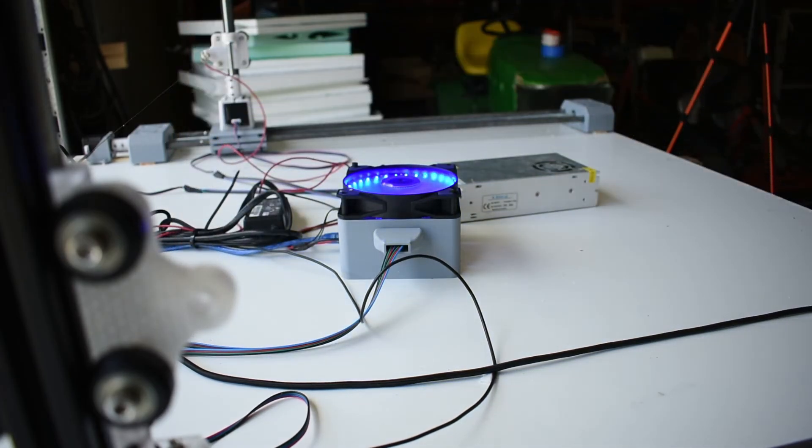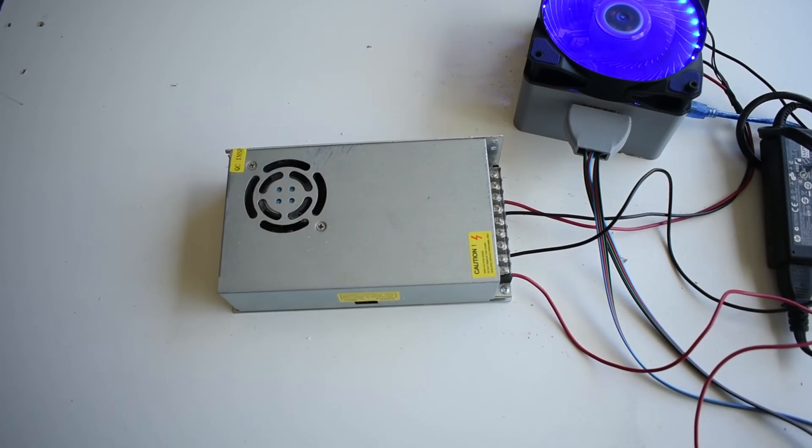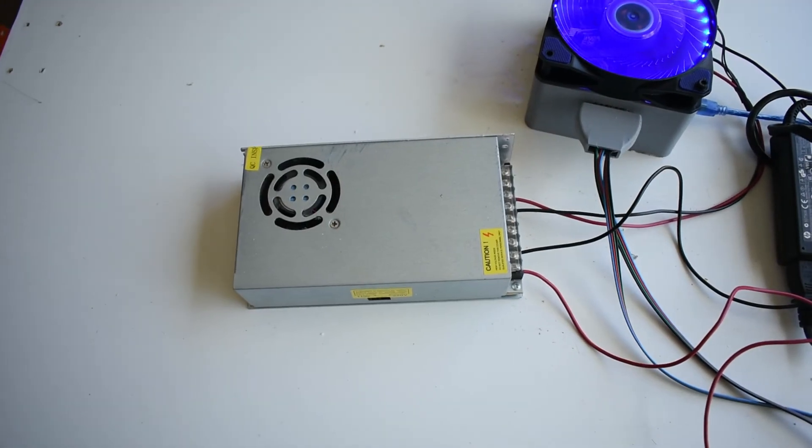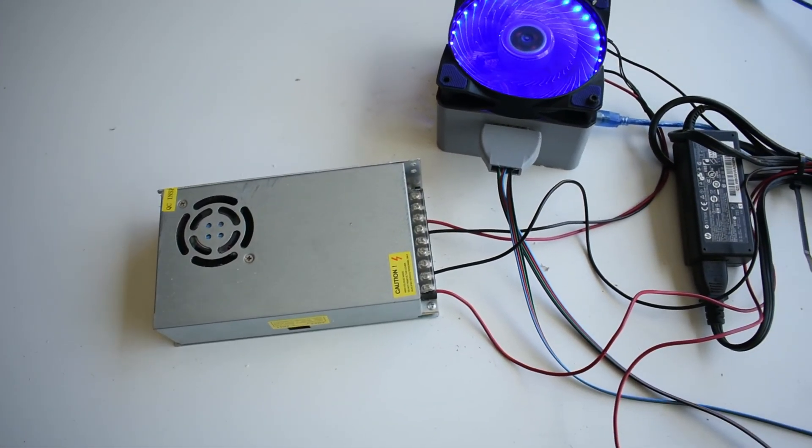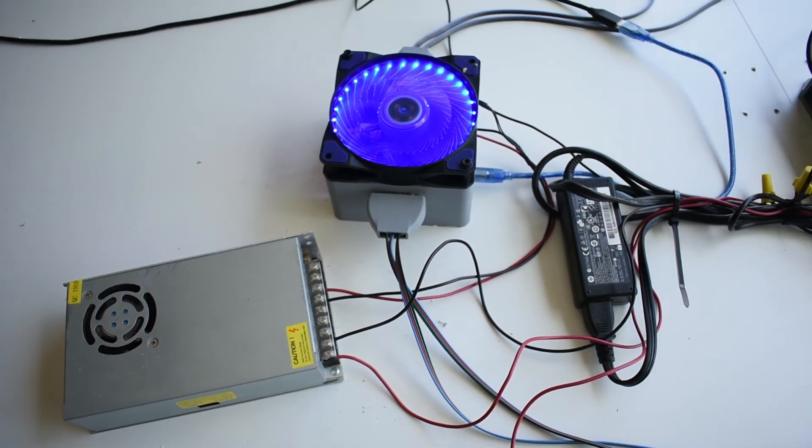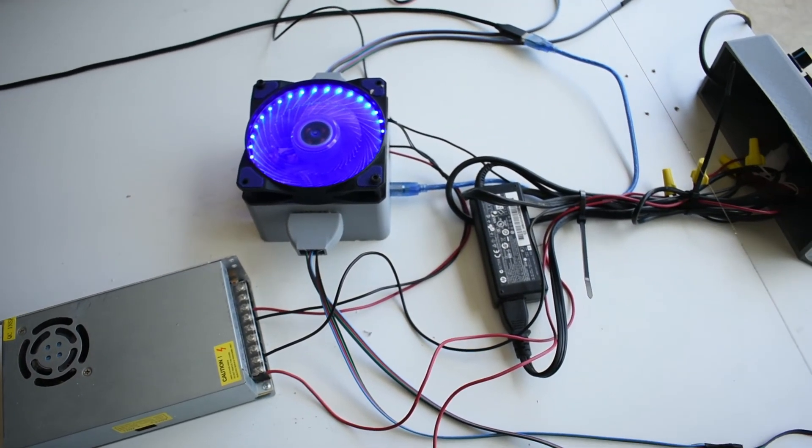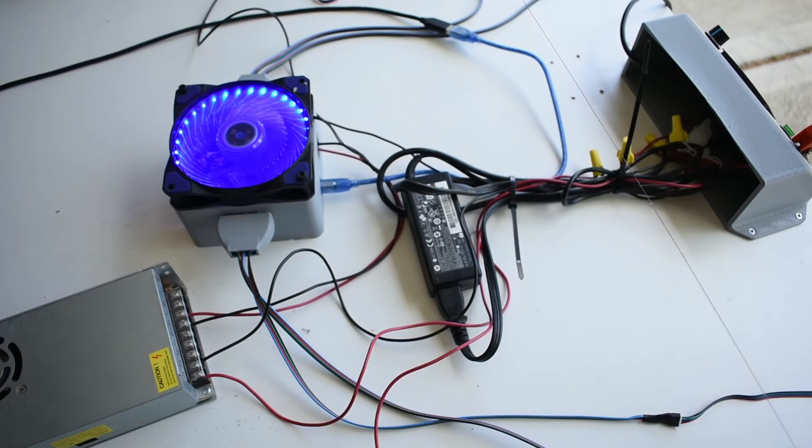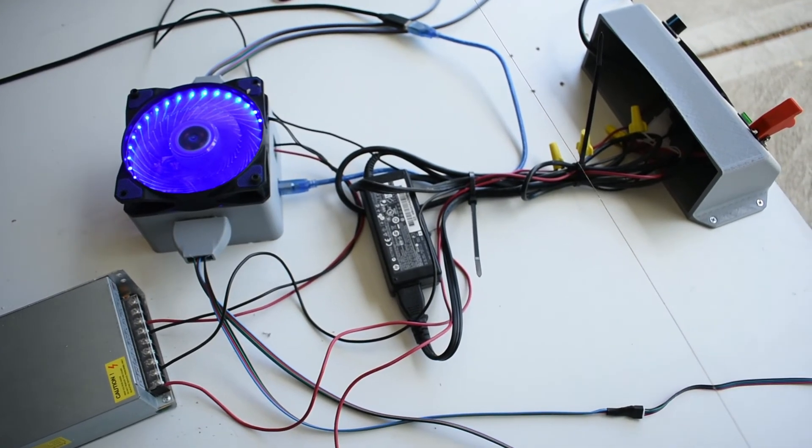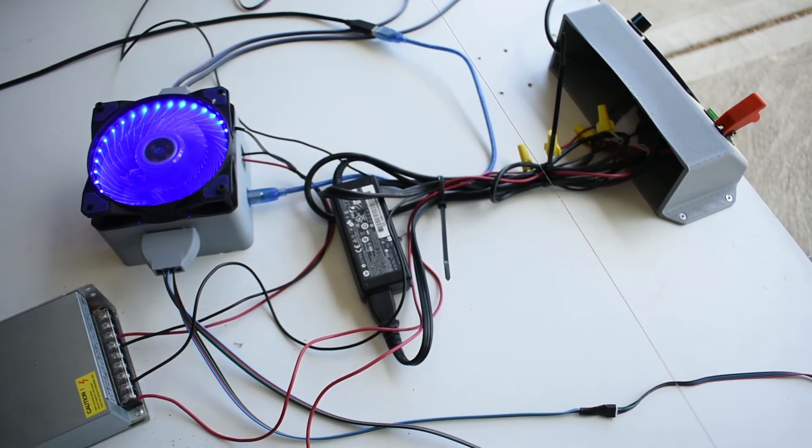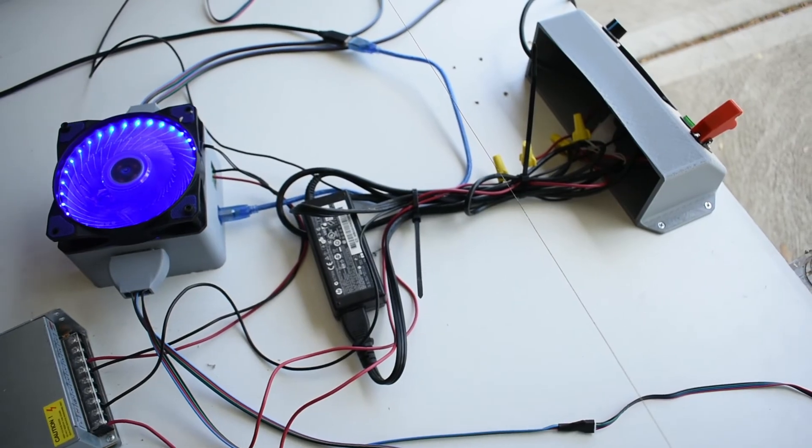So all those wires are a mess of 110 AC, 12-volt DC, and 18.5-volt DC, so maybe that's something I can improve in the future. But for right now, it works. I have the hot wire running off of an old laptop charger, and then the rest of the electronics running off of a 12-volt power supply from my old 3D printer.